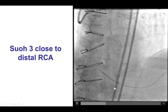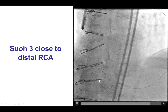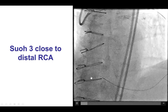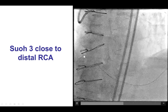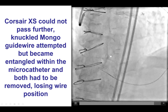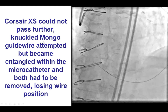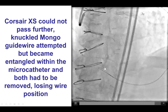We were able to deliver the Turnpike LP all the way to the distal RCA, and then we tried to advance a retrograde knuckled wire in order to cross retrograde from the distal to the proximal right coronary artery. However, this was very challenging. We used a Mungo guidewire, but after multiple attempts and after knuckling the wire, it became entrapped within the microcatheter, and we unfortunately had to remove both the microcatheter and the guidewire, losing our position.